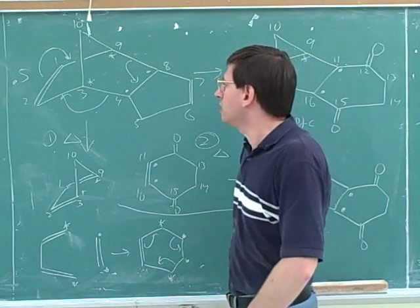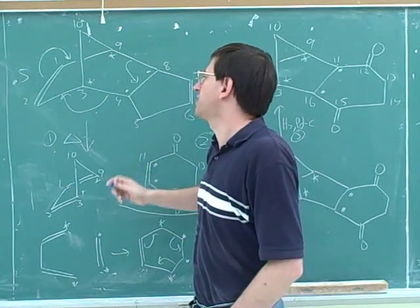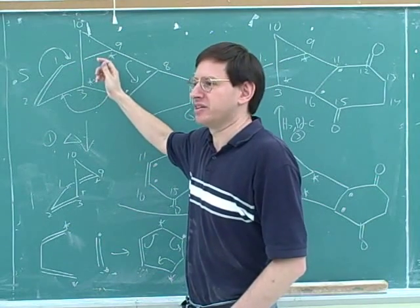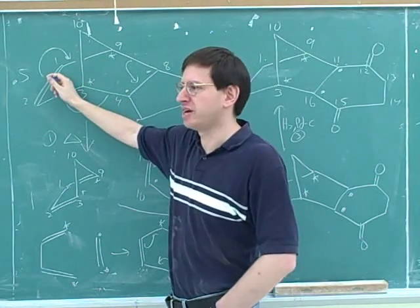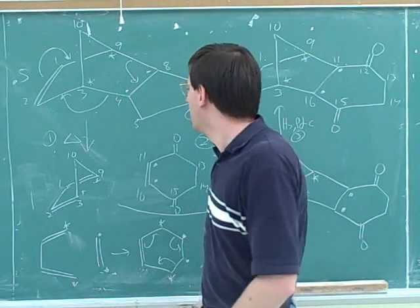So what are the techniques that we learned here? First of all, what was the clue to start with the retro Diels-Alder? The clue was that this could have been produced from a forward Diels-Alder because it's got a six-member carbon ring with a double bond. So we might as well try the retro Diels-Alder and see if that helps.